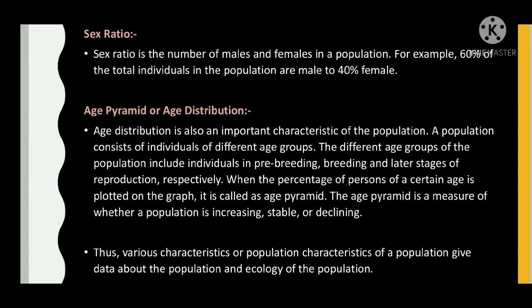Age distribution is also an important characteristic of the population. A population consists of individuals of different age groups, including individuals in pre-breeding, breeding, and later stages of reproduction. When the percentage of individuals of a certain age is plotted on a graph, it is called an age pyramid. The age pyramid is a measure of whether a population is increasing, stable or declining. Thus, various population characteristics give data about the population and ecology of the population.